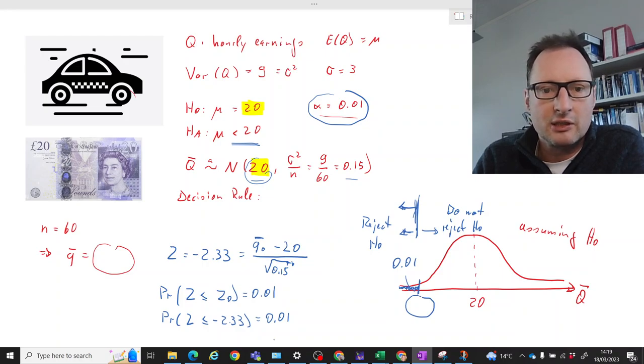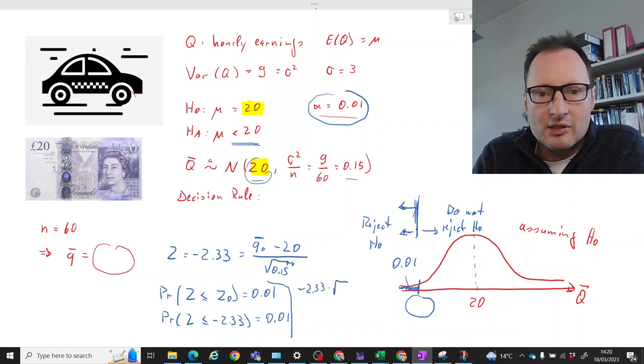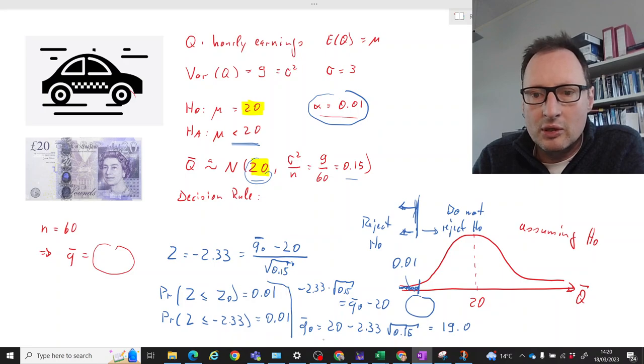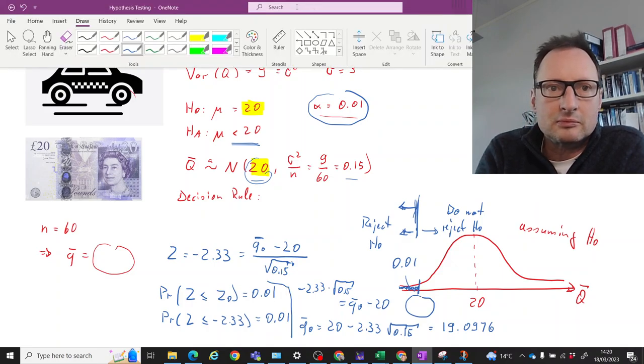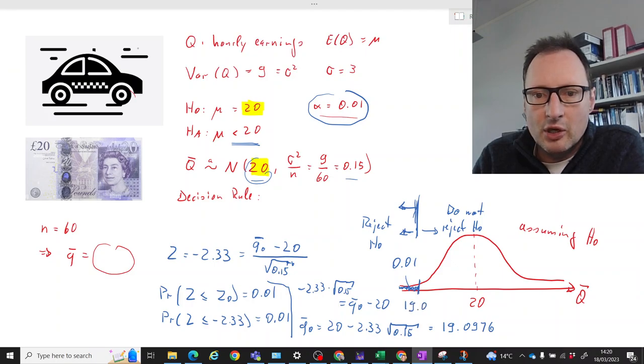Okay so if you calculate that, we can now solve that for Q bar. So we get negative 2.33 times square root of 0.15 is equal to Q bar zero minus 20, and therefore Q bar zero is equal to 20 minus 2.33 times the square root of 0.15, and if you calculate that what you get is 19.0976. That means this is our value here, 19.0976.